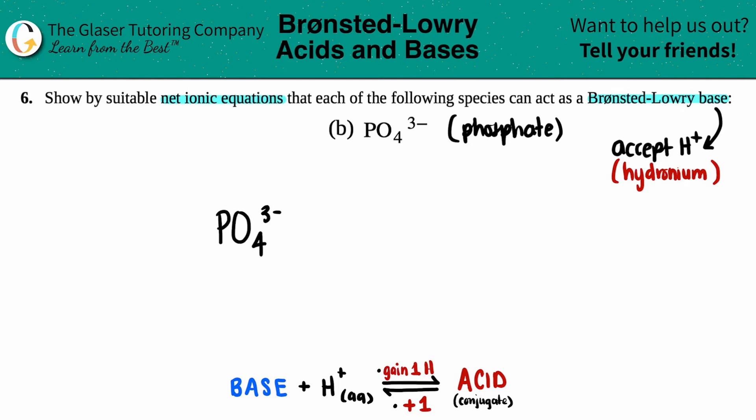PO₄³⁻ plus H⁺. Anytime you have a charged molecule - or an ion, that's what it is - in a net ionic equation, it's always aqueous. Since we're dealing with acids and bases, they're also in water, a.k.a. aqueous.